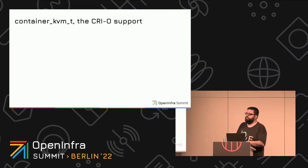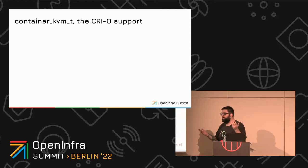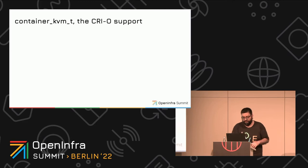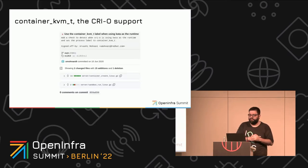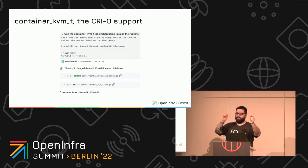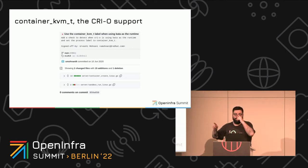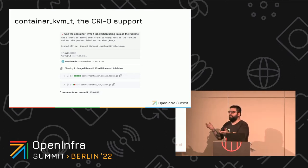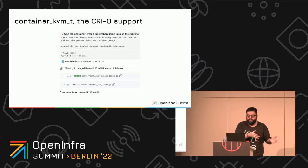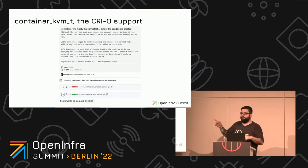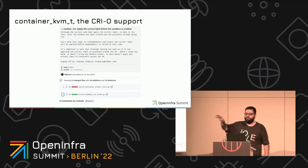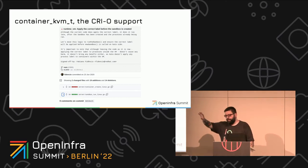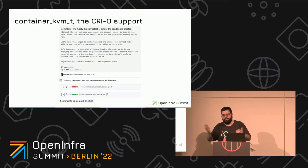I started working on the CRI-O support, because if you want this running on OpenShift, OpenShift uses CRI-O. The CRI-O support was added by Urvashi, but there was a small mistake — she added it when creating the container, which is already inside the virtual machine. We don't care about it being confined inside the VM; we want it confined on the host side. I made the changes to set the label on the OCI spec at sandbox creation time, so it goes to the Kata runtime and spawns everything with the right label.